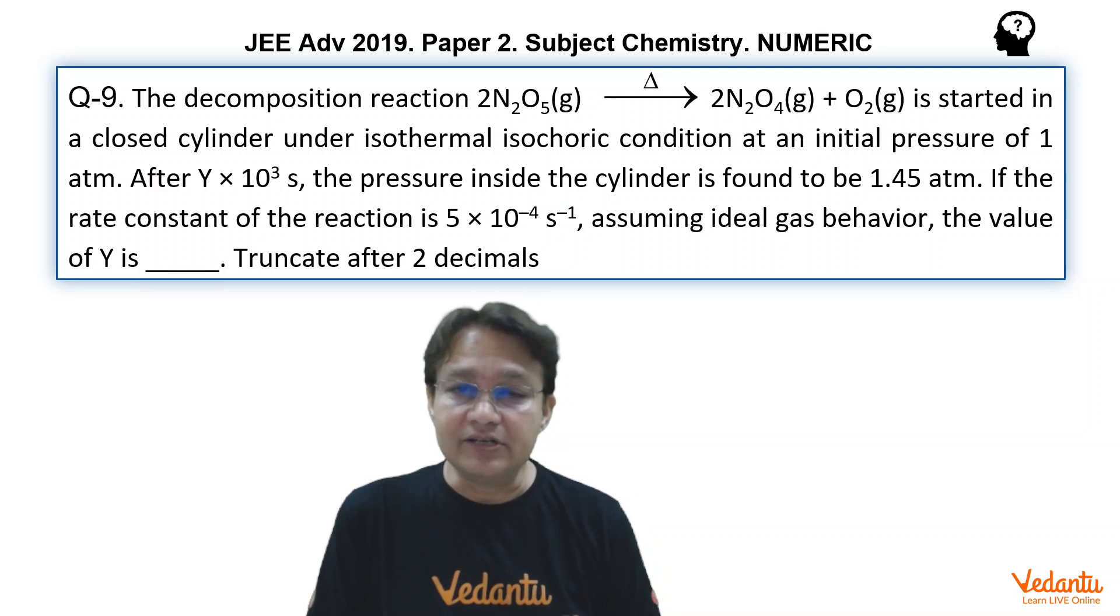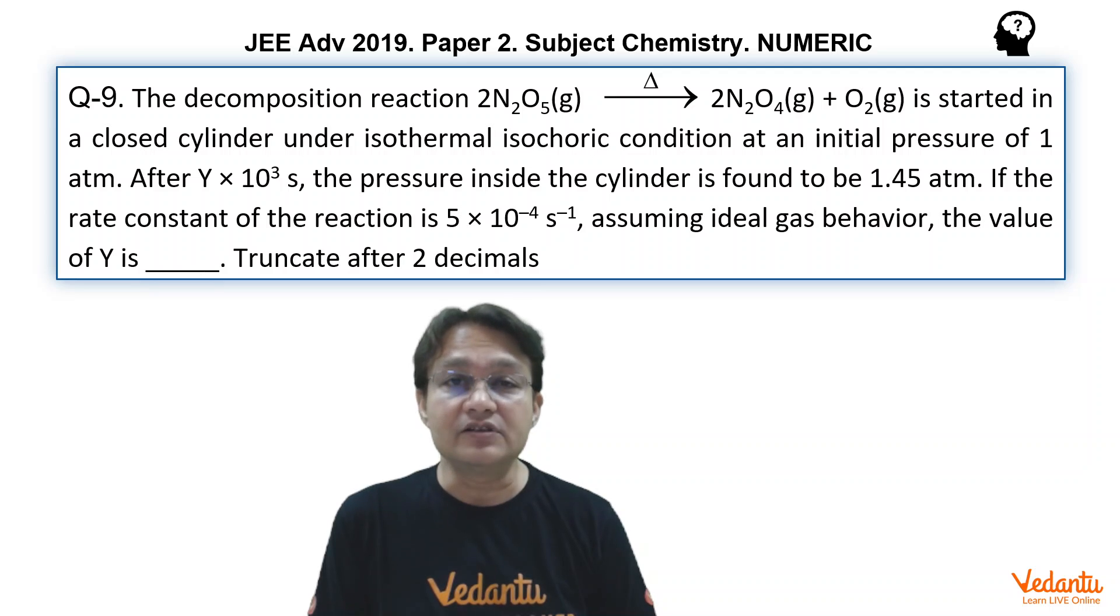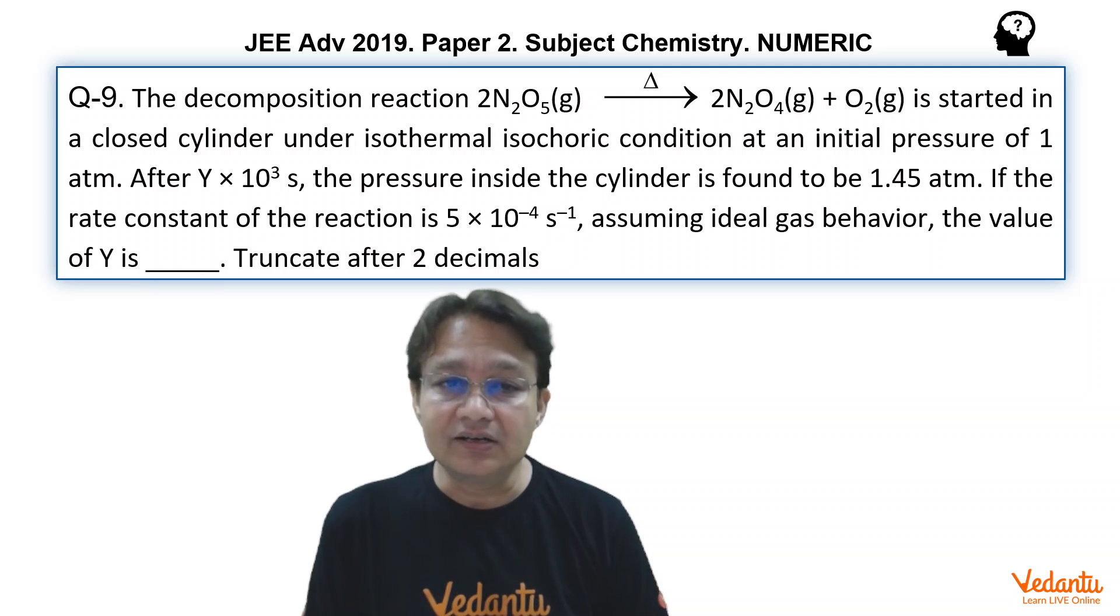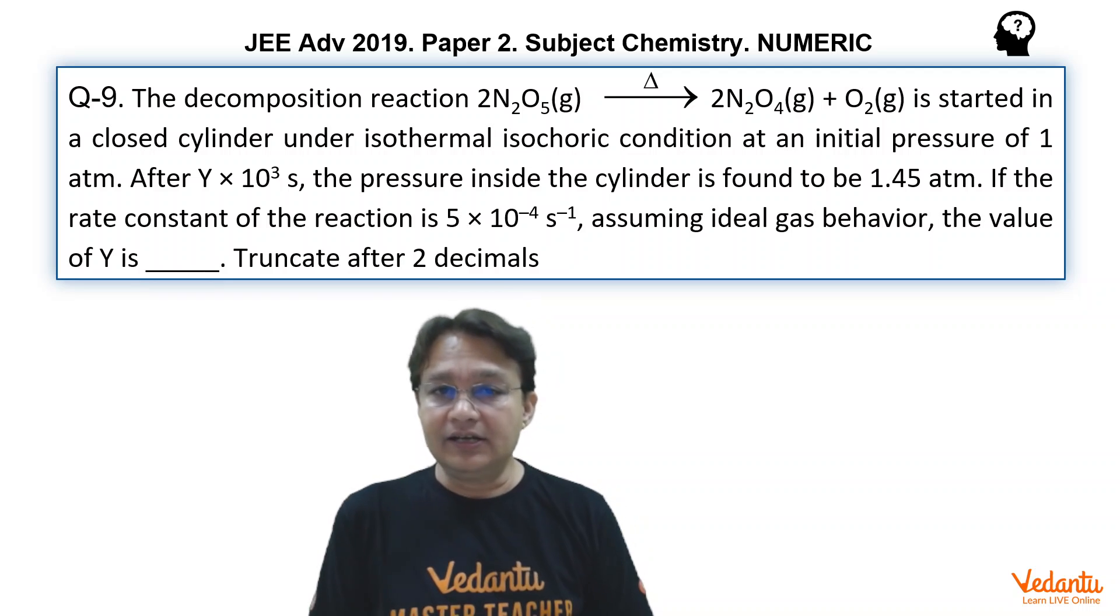In this question, decomposition of N2O5 is taking place and the equation for this is 2N2O5 breaking into 2N2O4 plus O2 in a closed cylinder, in fact, in isothermal, isochoric conditions at an initial pressure of 1 atm.